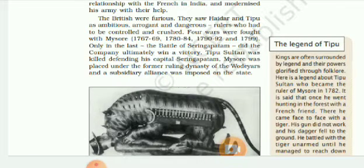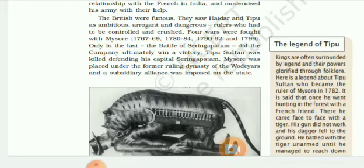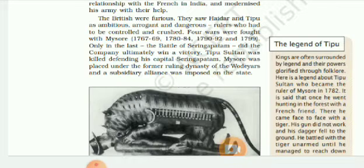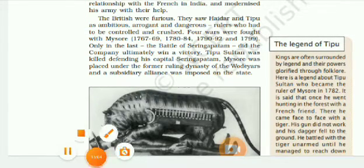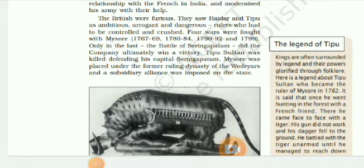Fourth Anglo-Mysore War, 1798 to 1799: The British Governor-General wanted Tipu to accept the subsidiary alliance. When Tipu refused, the Fourth Anglo-Mysore War started in 1798. Tipu died fighting. The British annexed the last portion of his conquest and gave some territories to the Nizam of Hyderabad for his help. The rest of the kingdom was placed under the Wodeyar ruling family. The Wodeyars accepted the subsidiary alliance.